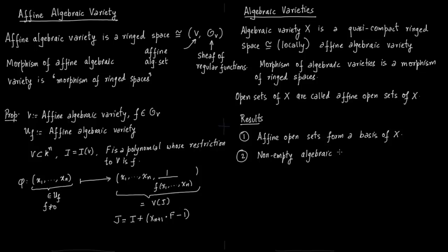And the non-empty algebraic set X can be uniquely written as a finite union of irreducible closed sets. So it can be written as a finite union of irreducible closed sets that do not contain each other. And these sets are called irreducible components of this algebraic variety X.